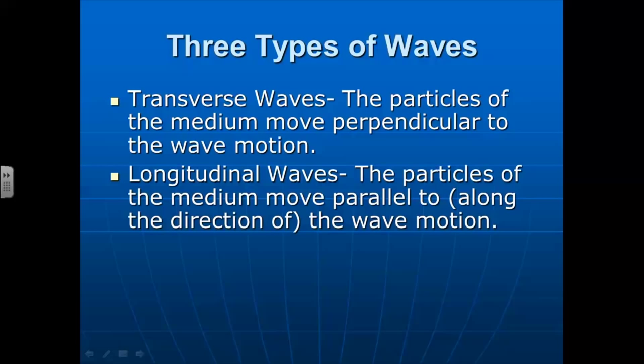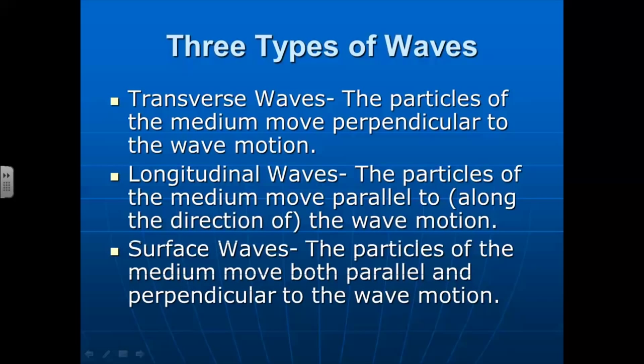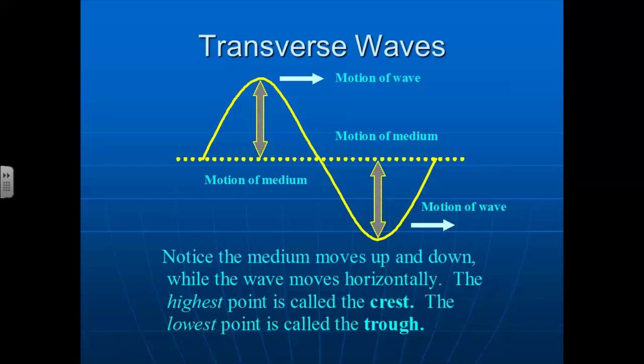A longitudinal wave is where the particles of the medium are moving parallel to the wave's motion. So it's like a material that's wiggling forward and backwards, or oscillating forward and backwards, and the wave is moving forward. And the last kind is called a surface wave. And this is pretty much just a transverse wave and a longitudinal wave put together at the same time, behaving in both ways at the same time.